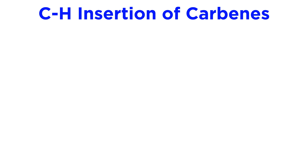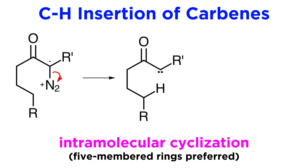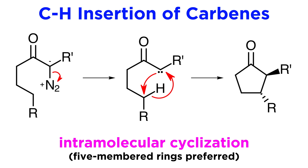The next major application of carbenes is insertion. Carbenes have the ability to insert themselves into existing sigma bonds, which are most frequently carbon-hydrogen bonds. This type of chemistry is often employed to promote intramolecular cyclization reactions, such as the following, which produces a five-membered ring. This involves carbene formation when nitrogen gas evolves, and then the carbene coordinates to the other carbon while a hydride shifts over to the first carbon, giving us our product.